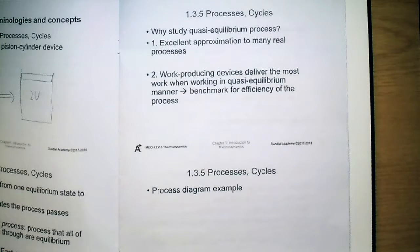Secondly, we will show in the following chapters that work-producing devices can produce the most work when they are working in a quasi-equilibrium manner. That means this idealization provides a benchmark for us to see if an actual process is efficient.